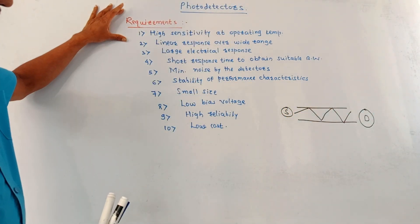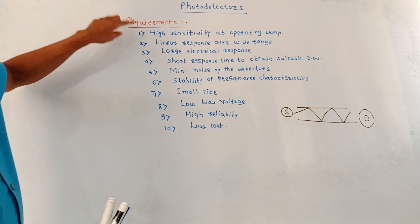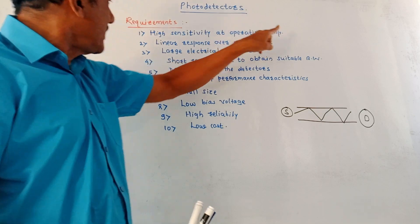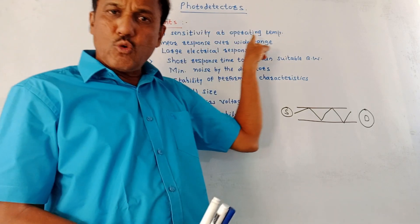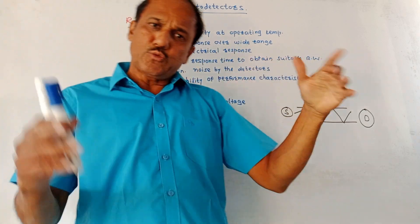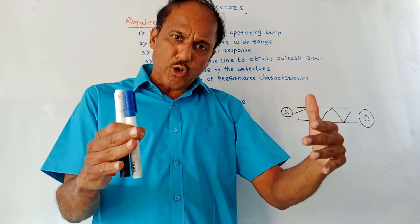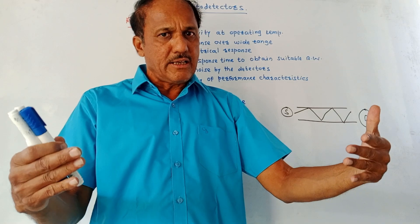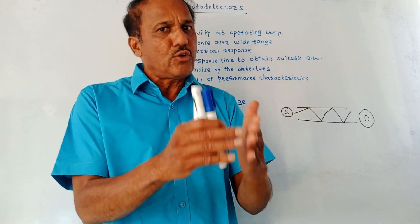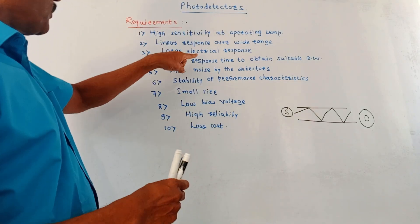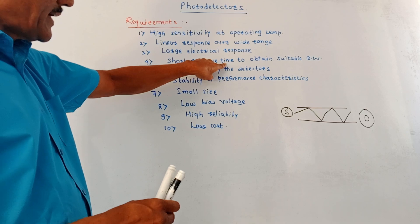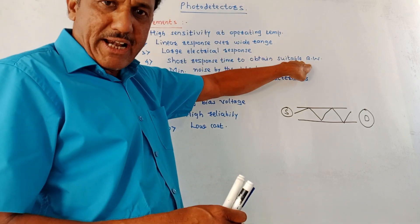What are the basic requirements of the photo detector? First, it should have high sensitivity at the operating temperature. Second, linear response over a wide range. Third, large electrical response — its efficiency should be as high as possible so that you get a large electrical output. Then, short response time to obtain suitable bandwidth, meaning the action of converting optical signal to electrical signal should be quick.